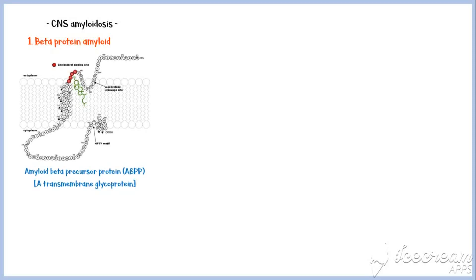CNS amyloidosis is also an important type. Under this, first let's discuss about beta-protein amyloidosis. Amyloid beta-precursor protein, which is a transmembrane glycoprotein, is the precursor protein in beta-protein amyloidosis.